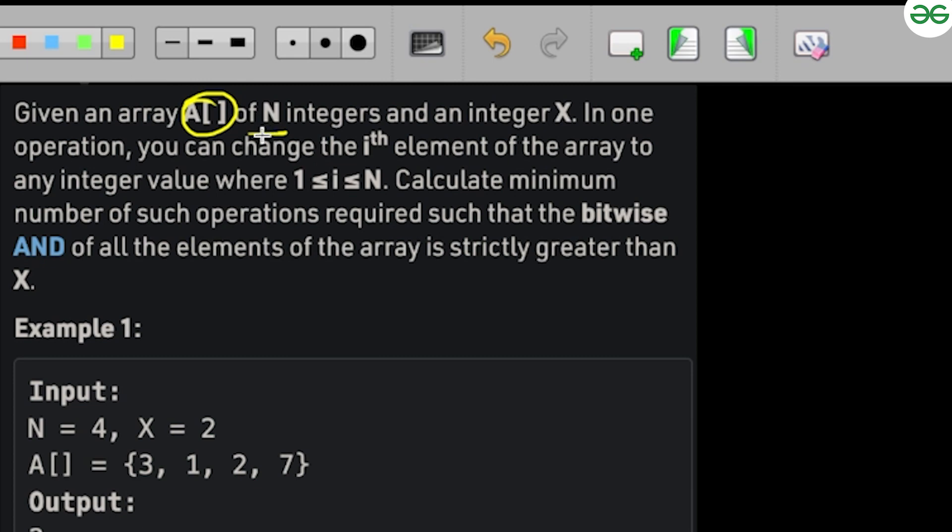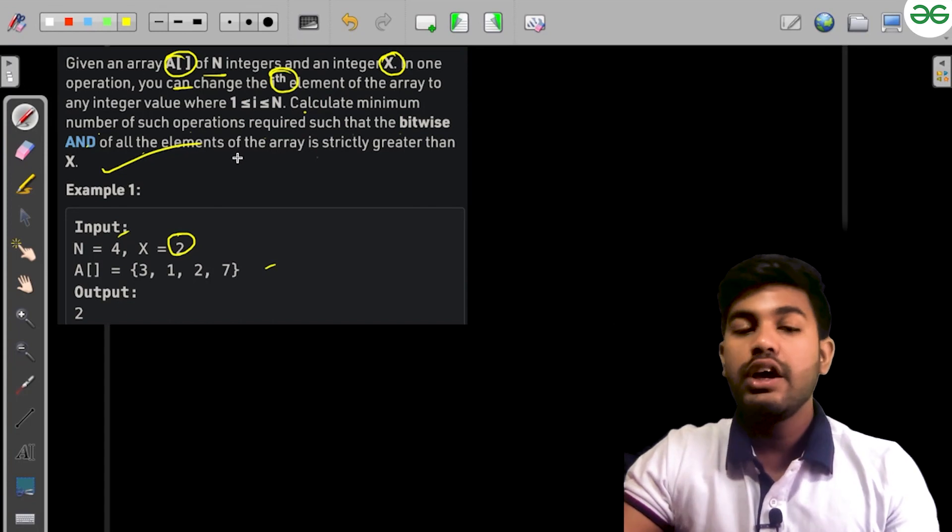Let's understand the problem statement. We're given an array of N integers and an integer X. In one operation, you can change the ith element of the array to any integer value where i ≤ N. Calculate the minimum number of operations required such that the bitwise AND of all elements is strictly greater than X.